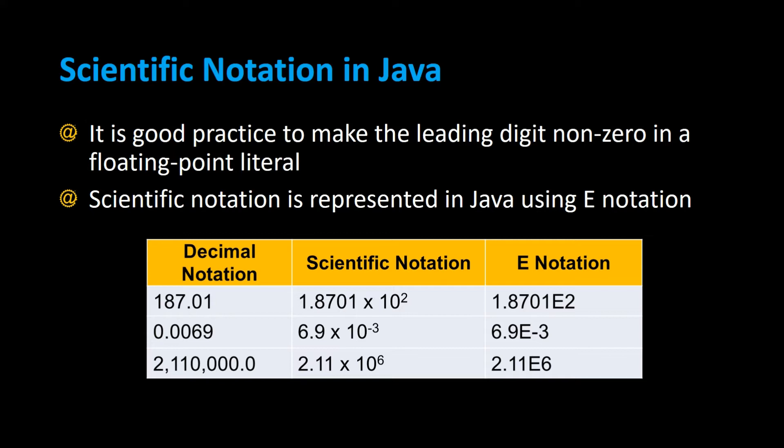In this table we can see that if we had the decimal notation 187.01, in scientific notation that would be 1.8701 times 10 to the second power, which means you move the decimal to the right two spaces. In Java you would write it with e-notation as 1.8701 with a capital E and the number 2, where E2 replaces 'times 10 to the second power'.